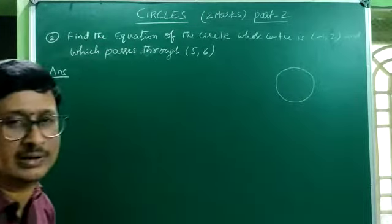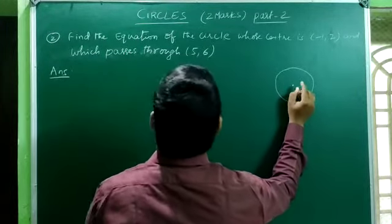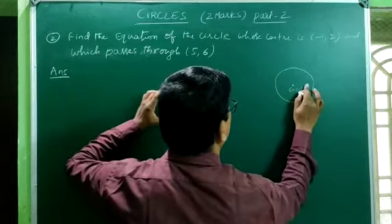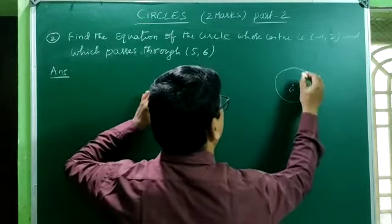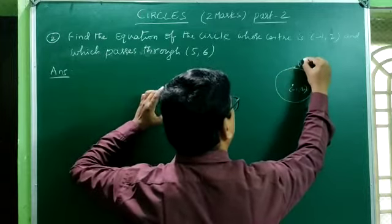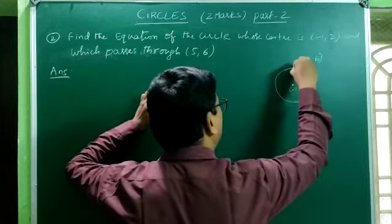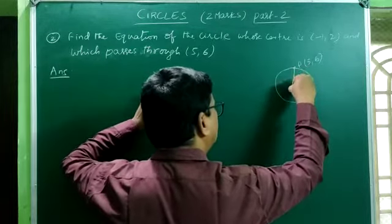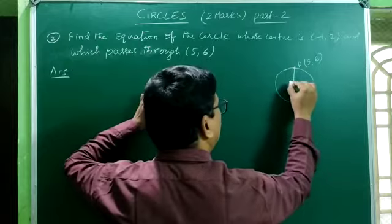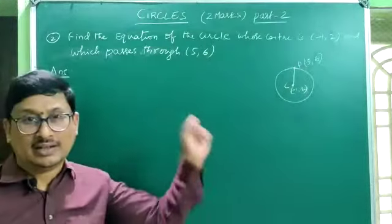This is the given circle. The center of the circle is given. What is given? (−1, 2). The circle passes through point P = (5, 6). If you join P and the center, the distance CP becomes the radius of the circle.